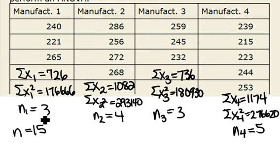The next thing we want to do is find our means and standard deviations for each group. The mean for group one, we can take our sum of 726, divide by our sample size of 3, and we get 242.